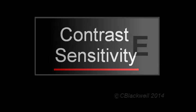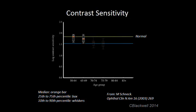Contrast sensitivity is the ability to distinguish objects from their background. It is a more sensitive measure of the quality of vision, and as such is often used in research studies on vision, but it is not used as a motor vehicle vision test. Contrast sensitivity also decreases over time, at least partly because of cataract development.